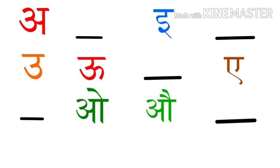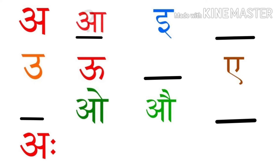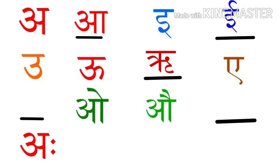आओ के बाद फिर से खाली स्थान और फिर A। बच्चो, इन खाली स्थानों को हमें भरना सीखना है। A के बाद क्या आएगा बताओ? A — Very good! E के बाद सोचो, E के बाद क्या आएगा? E — Very good! फिर O और फिर O। अब ये O के बाद क्या आएगा? सोचो सोचो। R — Very good! R के बाद A। A के बाद क्या आएगा? A — Very good! O, O।